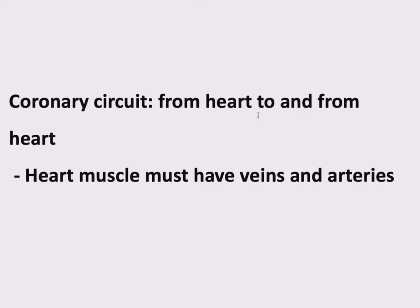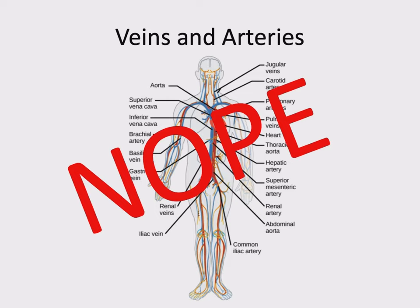The third is called the coronary circuit, which is easy to forget about — but the heart needs blood. The heart is a muscle, working very hard, and the heart muscle itself needs to be supplied with oxygenated blood. The blood flowing through the chambers isn't really getting a chance to absorb O2 as it flows through, so we need veins and arteries connected to the heart itself. This is called the coronary circuit — from the heart to and from the heart.